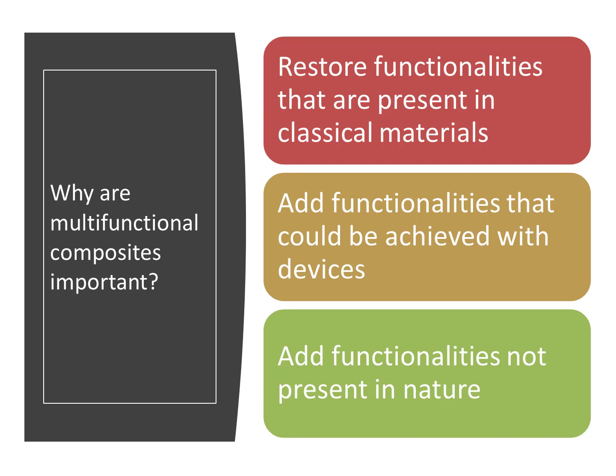Our initial interest in multifunctional materials was to seek ways to restore functionalities that classical materials have but are lost when classical materials such as aluminum are replaced by composites. Later we learned that it was possible to integrate into the composite structure some of the functionalities currently provided by devices, such as antennas. And finally we realized that some composites can provide novel functionalities not commonly available on any classical material. Ideally, multifunctionality should be built into the material itself, without requiring coatings or other components. When the functionality is not available in nature, we say that what we have is a metamaterial.